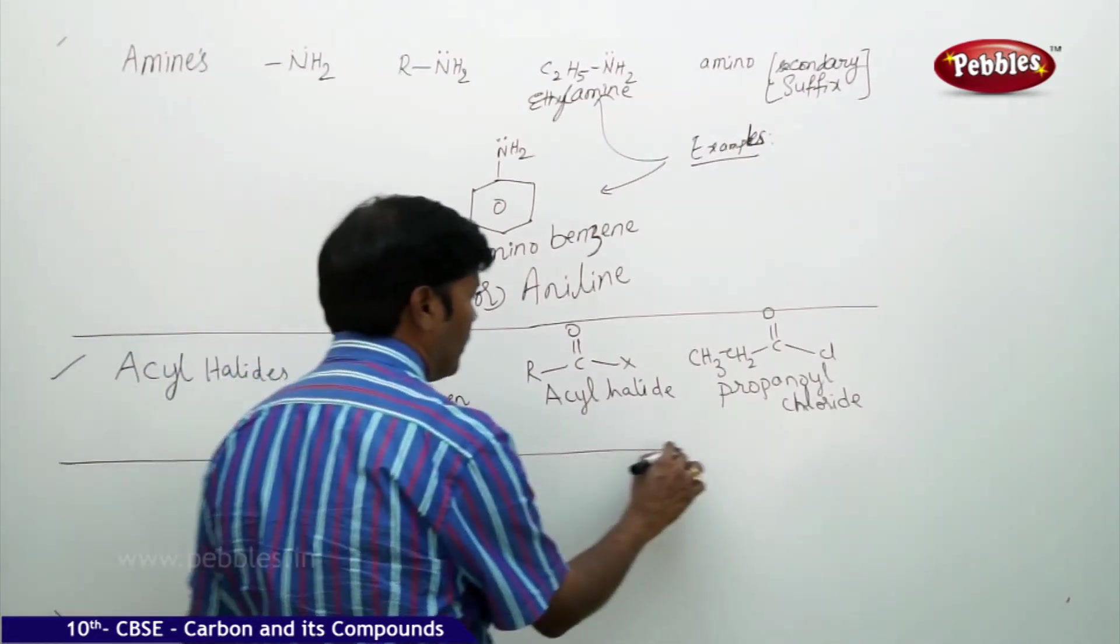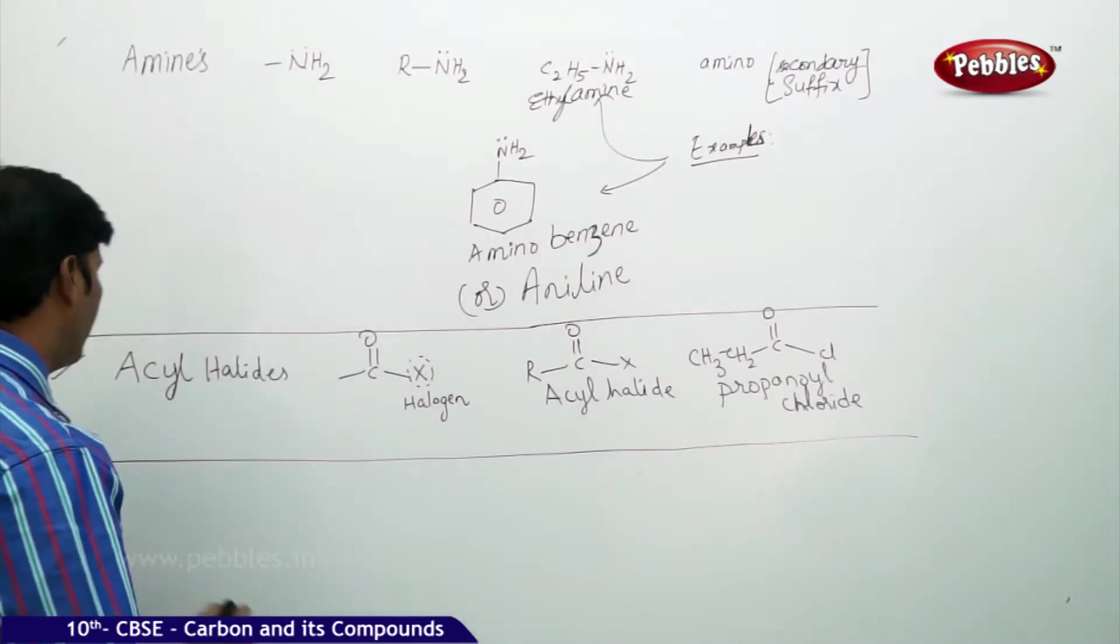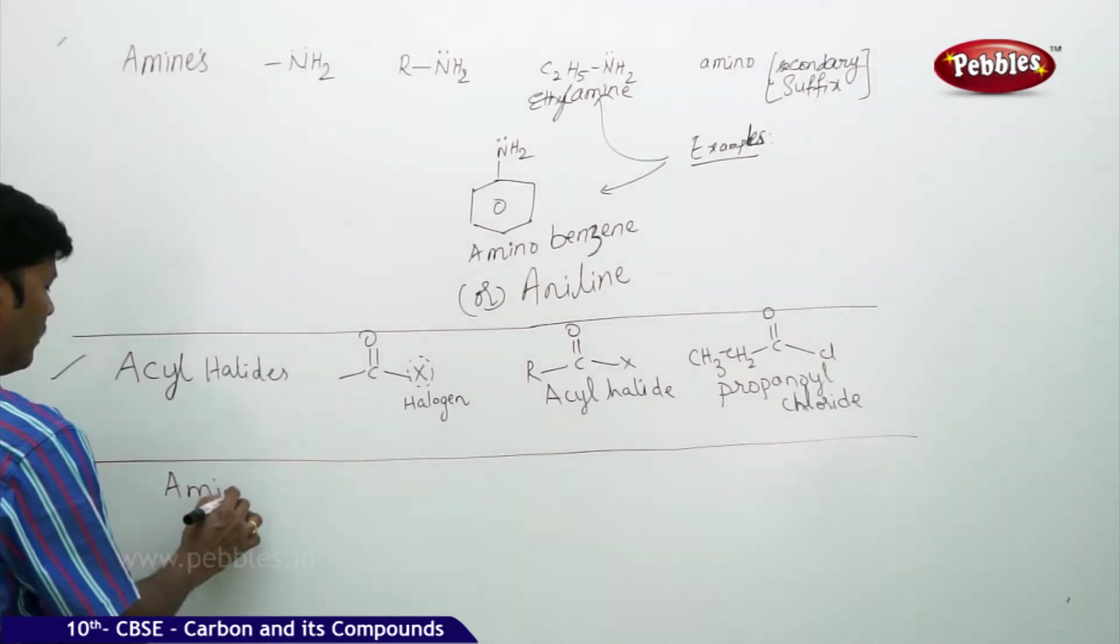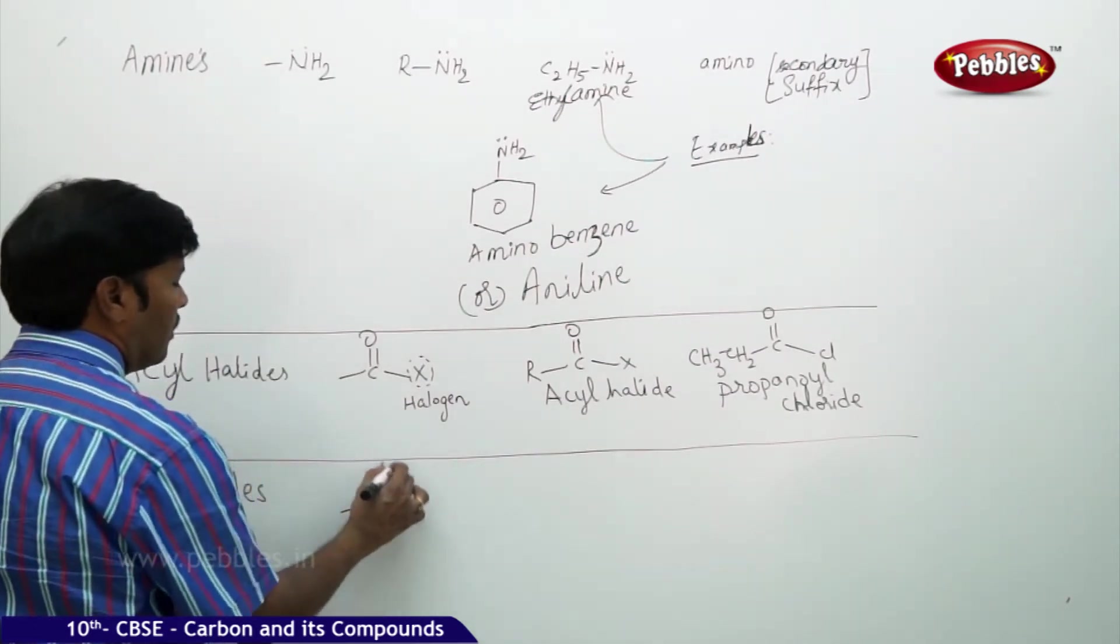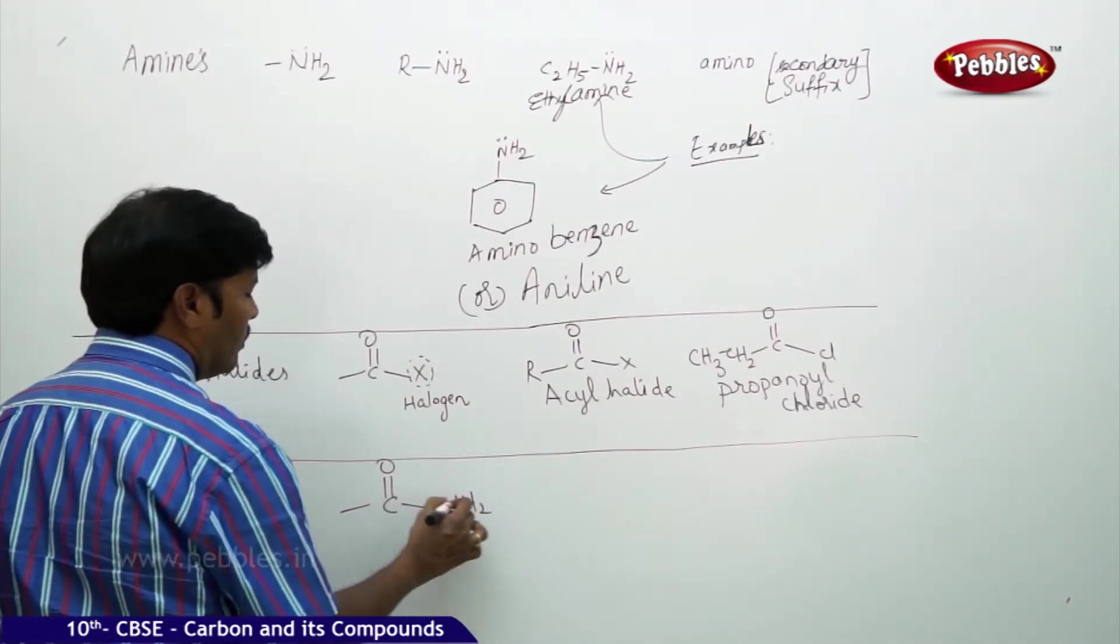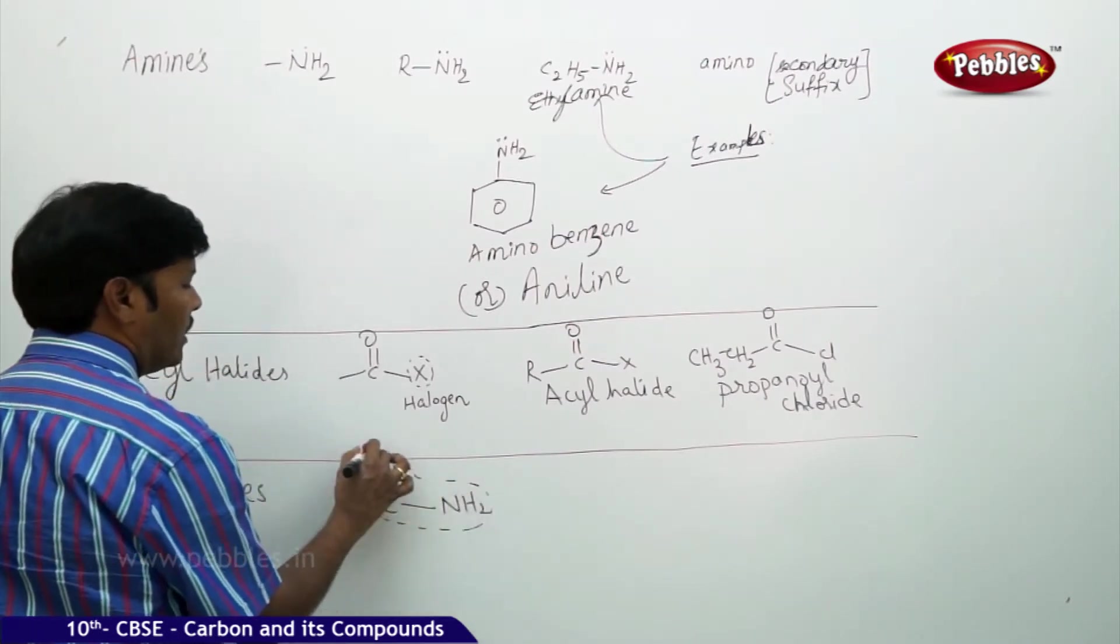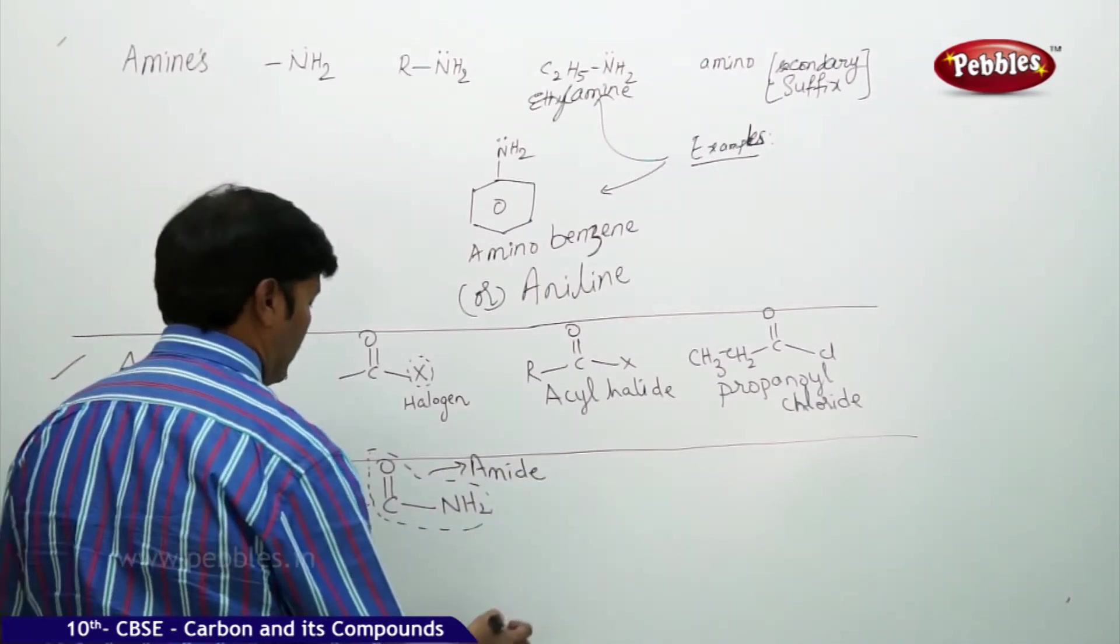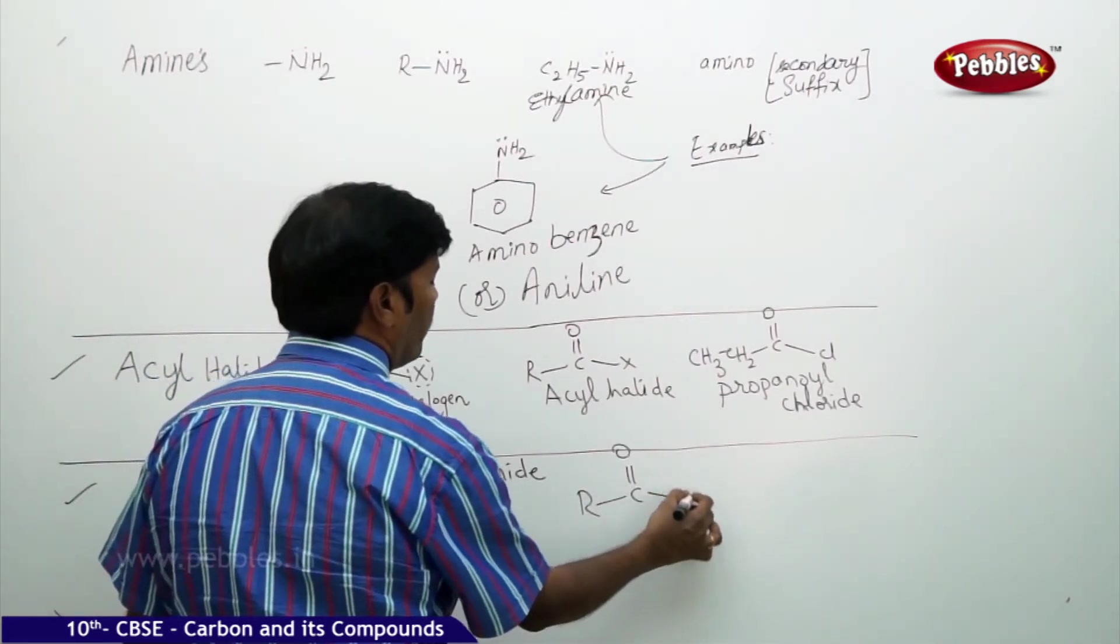Likewise, you can take one more class of compound: amides. General formula: C=O-NH2. This is the whole structure, called amide. General formula: R-C=O-NH2.